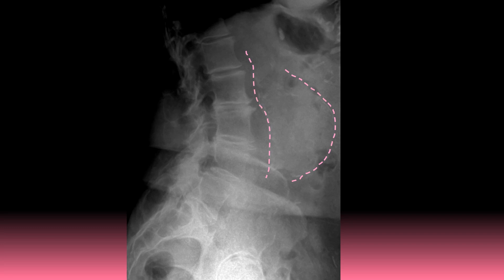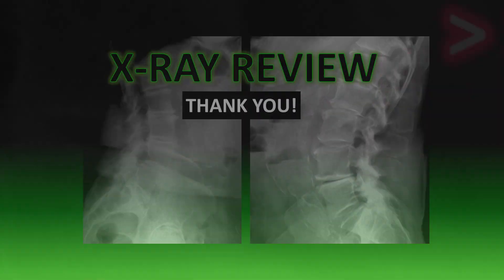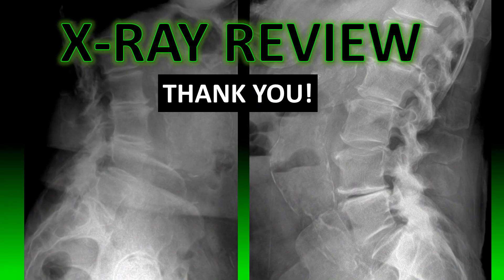Here's an example of a large abdominal aortic aneurysm measuring greater than 10 cm. Thank you so much for listening and I hope you enjoyed this video. If you did, please take a second to like and subscribe — greatly appreciate it.